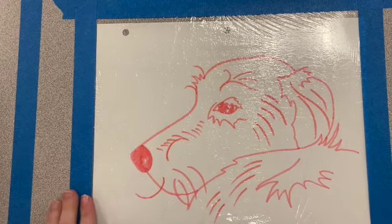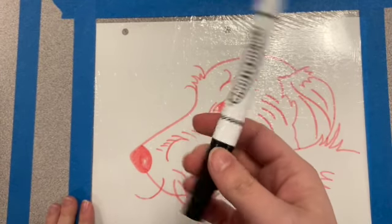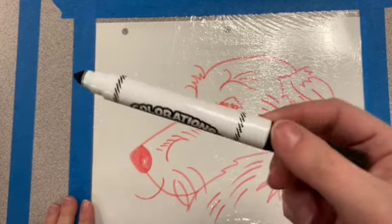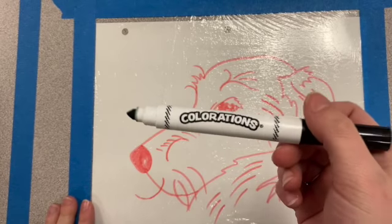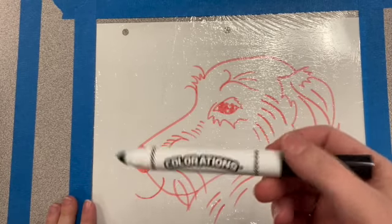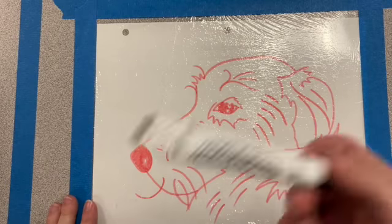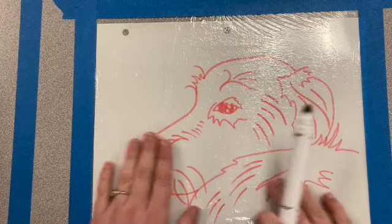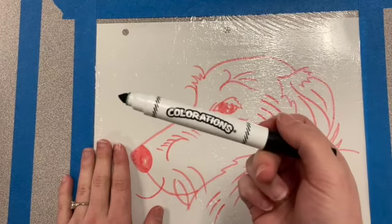Now what I'm going to do is take a washable marker, and it is very important that it is washable. If you try to do this with a permanent marker like a Sharpie, that isn't going to come off of your smooth surface onto your piece of paper later.